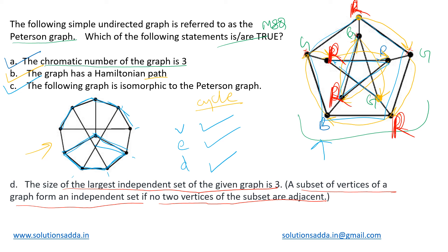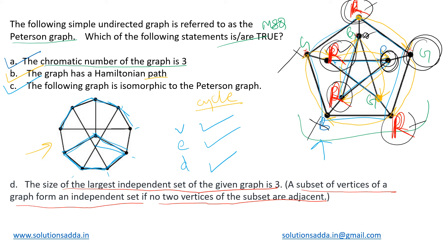Can we include any other node in this independent set? The green node cannot be included because it is adjacent to two red nodes. The blue node cannot be included because it is adjacent to a red node. The remaining nodes also cannot be included. So we can only have an independent set of these 4 red nodes — or similarly, 4 green nodes — giving a largest independent set of size 4, not 3. Therefore option D is incorrect, and our final answers are A, B, and C.